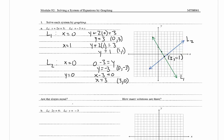They ask us: are the slopes equal? The slopes are not equal — we can see a positive slope for L2 and a negative slope for L1, so the answer is no. Then they ask how many solutions are there, and we have one solution. The solution is (2, -1).